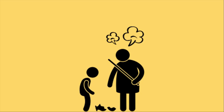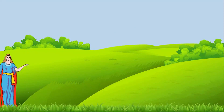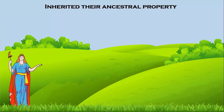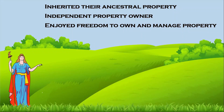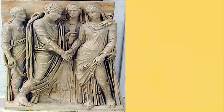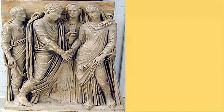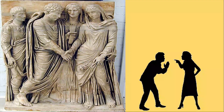Roman women enjoyed considerable legal rights. They inherited their ancestral property, and a woman continued to retain full rights over the property of her natal family even after marriage. She became an independent property owner upon her father's death. Marriages were generally arranged. After marriage, the wife did not transfer her assets to her husband, though her dowry went to him for the duration of the marriage, while she remained the natural heir to her ancestral inheritance.